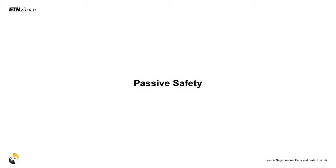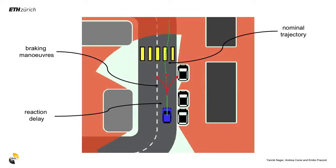We incorporate such shadow regions into the planning process in a way that we can guarantee the vehicle always has enough time to perceive and plan a braking maneuver should a hypothetical agent appear. A key aspect is that we explicitly take the vehicle's reaction time due to sensing and computational delays into account.